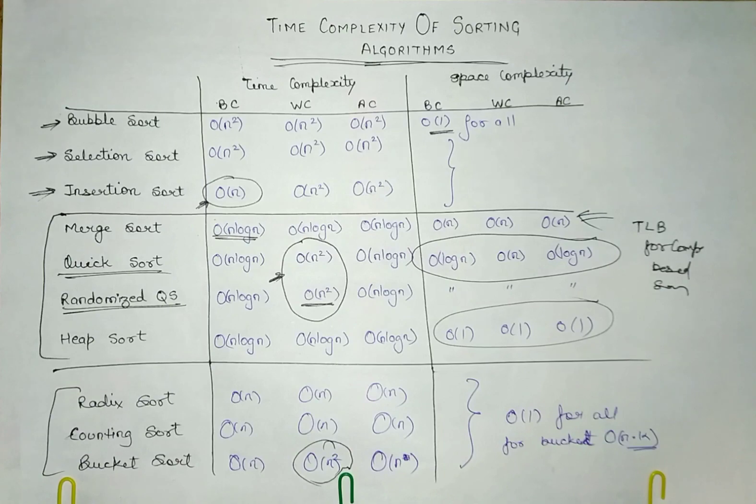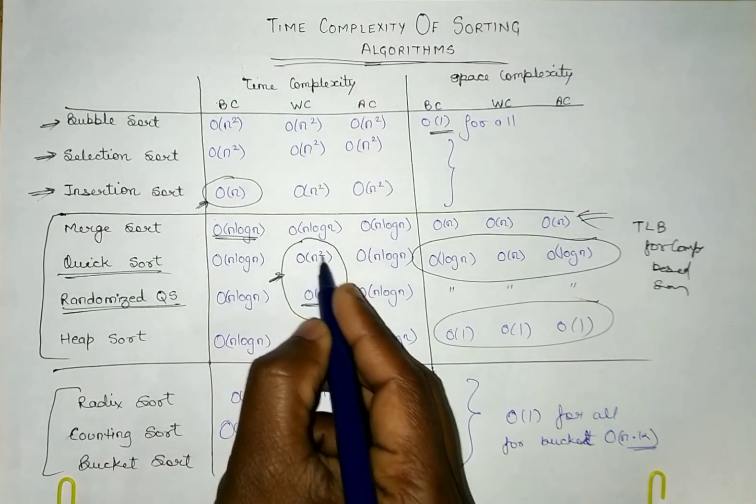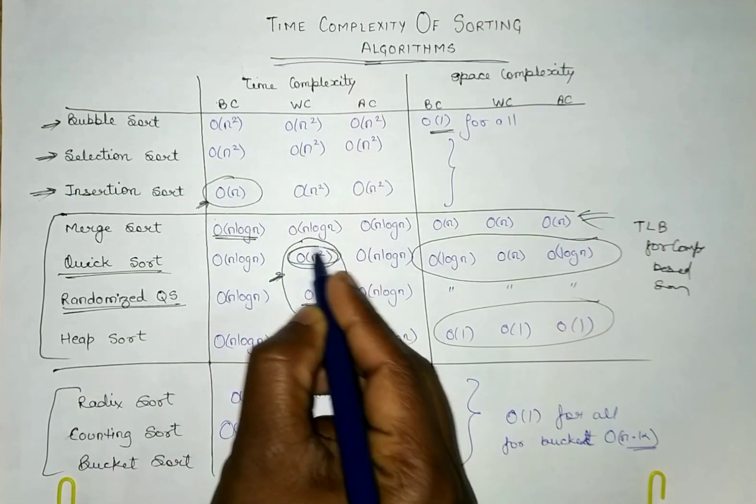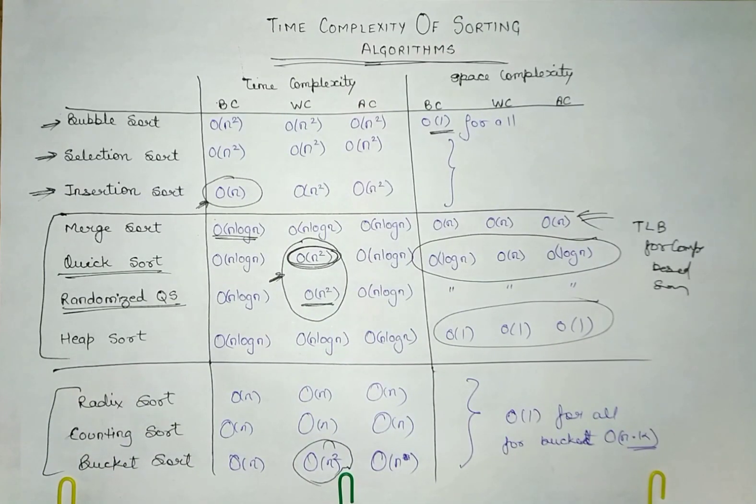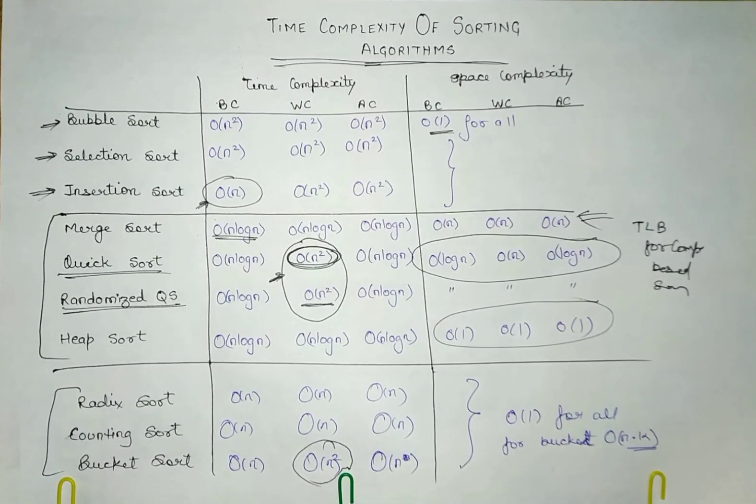But if there is a question like tightest upper bound, the tightest upper bound is going to be order of n square because no one is going above that. That means lower bound you have to take the minimum time complexity and upper bound you have to take the maximum time complexity. This way you can answer these questions.